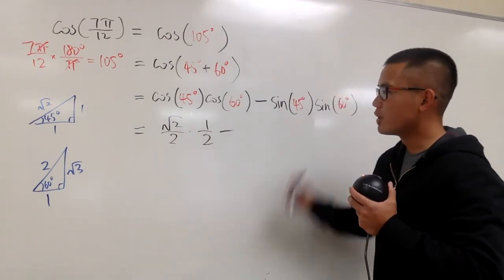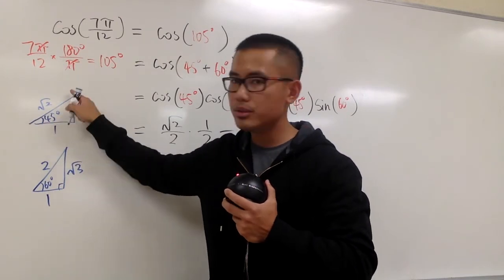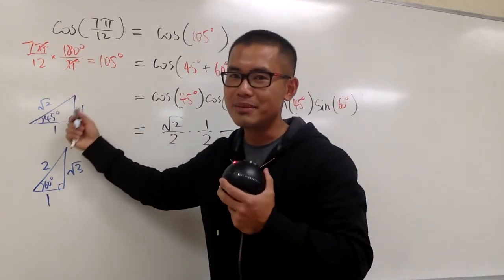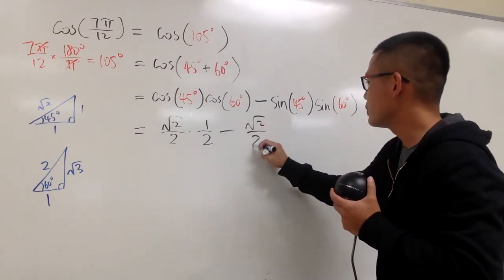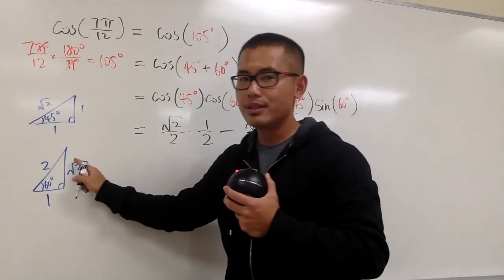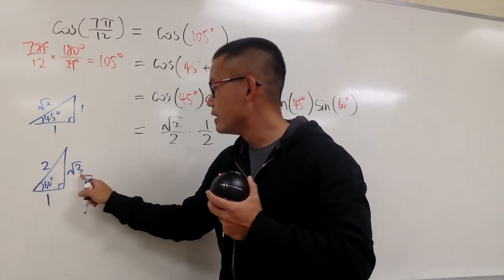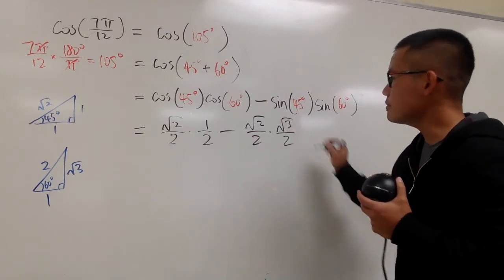And then, minus sine of 45. Sine will be opposite over hypotenuse. 1 over square root of 2 is the same as square root of 2 over 2, right? So we can put that down right here. Square root of 2 over 2. Times sine of 60, which is opposite over hypotenuse. Square root of 3 over 2, right? So let's put that down like this.